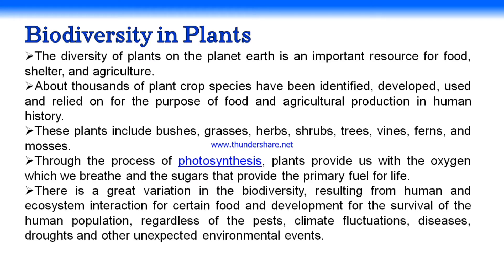The diversity of plants on planet Earth is an important resource for food, shelter, and agriculture. Thousands of plant crop species have been identified, developed, and used for food and agricultural production in human history. These plants include bushes, grasses, herbs, shrubs, trees, vines, ferns, and mosses. Through photosynthesis, plants provide us with the oxygen we breathe and sugars that fuel our life.